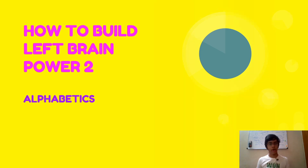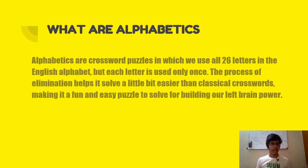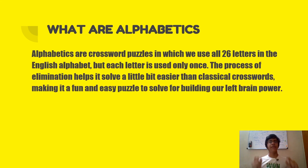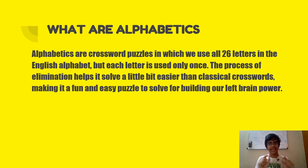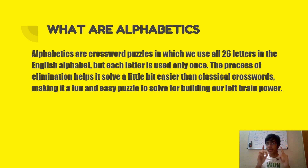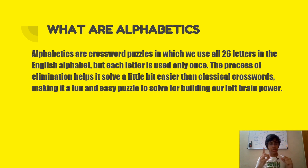Alphabetics are a quite unique puzzle. Alphabetics are crossword puzzles in which we use all 26 letters of the English alphabet, but each letter is used only once. This is exactly like classical crosswords that you have solved in puzzle books, but what is unique about alphabetics is that all 26 letters of the English alphabet are used — only once, without repetition. So from A to Z, all letters are used only once without repetition.